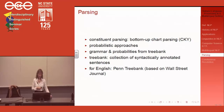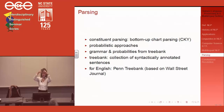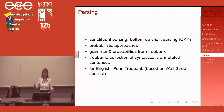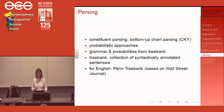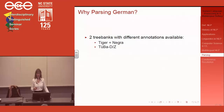For parsing we use bottom-up chart parsers — standard algorithms from compiler construction — but we need a probabilistic layer on top to get the most likely analysis rather than millions of possible analyses. The grammar and probabilities are extracted from a treebank, which is a collection of sentences annotated by students. For English we have the Penn Treebank based on the Wall Street Journal, so we're really good at parsing financial texts. I want to do something different and parse German.